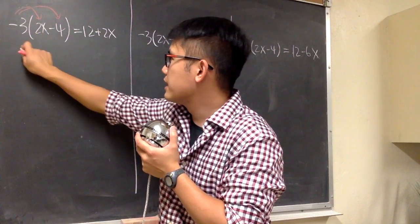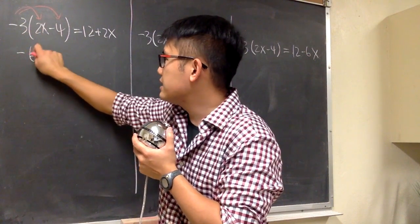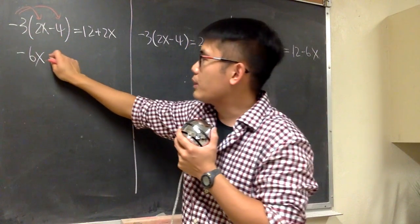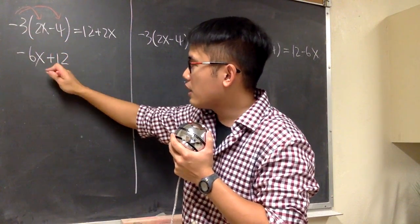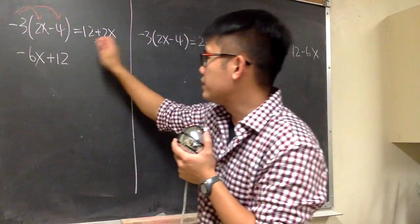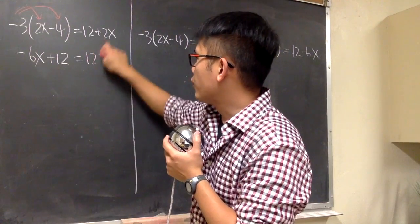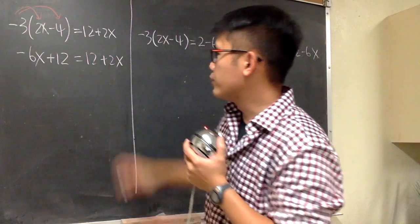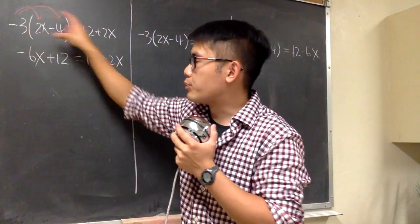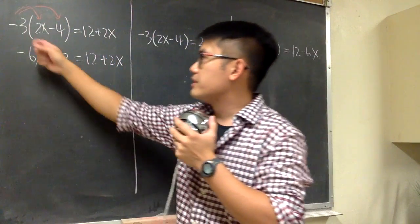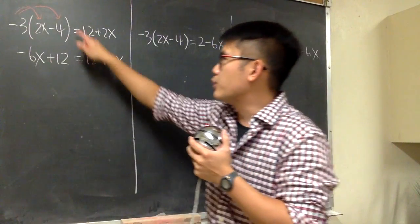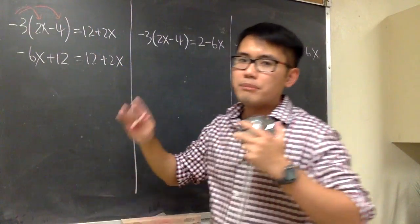Negative 3 times 2x, that's negative 6x. Negative 3 times negative 4, that will give us positive 12. And the right-hand side should stay the same, because we didn't do anything with it — 12 plus 2x. So the first point: whenever we have parentheses in the equation, distribute the number in front into the parentheses. Especially when there's no power, but that's for later on.